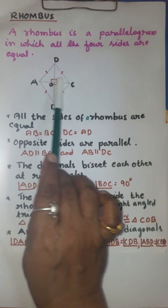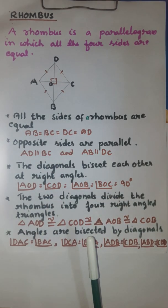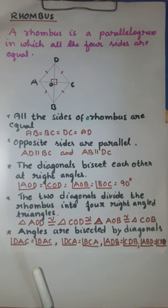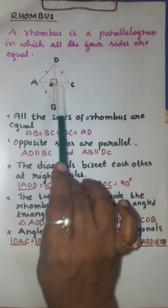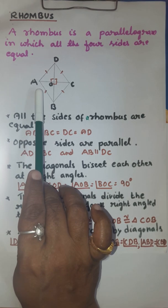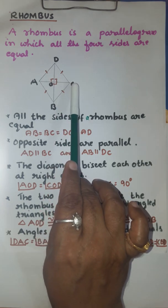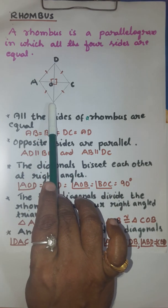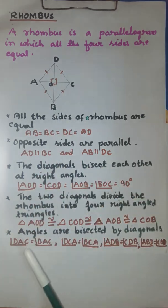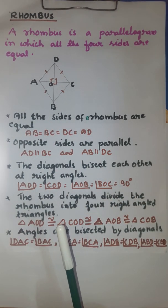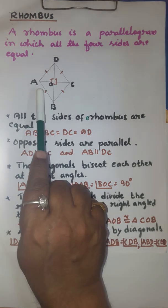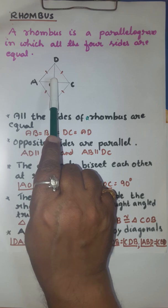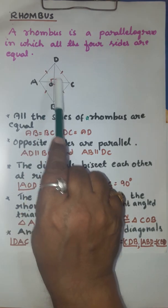The two diagonals divide the rhombus into four congruent right triangles. You can see that right triangle AOD is congruent to right triangle COD, and right triangle AOD is congruent to right triangle BOC. The four right triangles — AOD, DOC, AOB, and BOC — are all equal and congruent to each other.